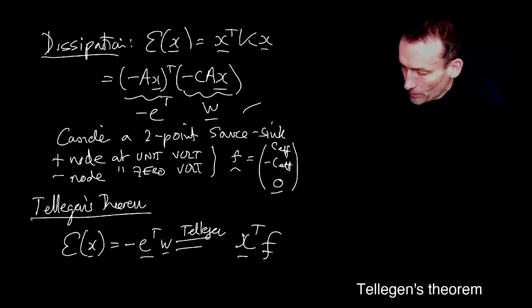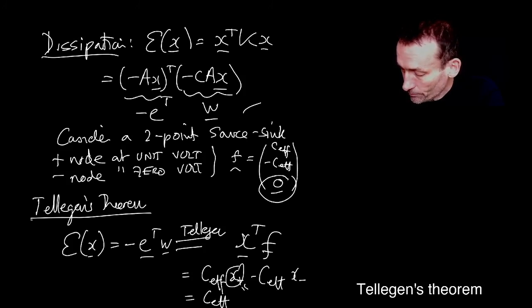But F is mostly zero except for the CF and minus CF corresponding to the plus node and minus node. So what we have there is CF X plus minus CF X minus, because all of the other components of F are zero, so we don't get anything else. But then X plus is one and this is zero.